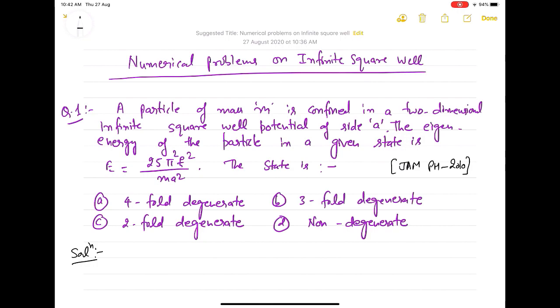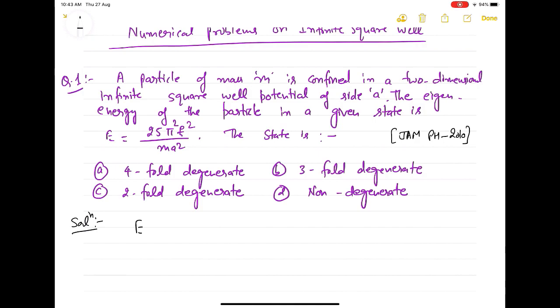This is question number one. A particle of mass m is confined in a two-dimensional infinite square wall potential of side A. The eigenergy of the particle is given in a state as E equal 25π²ℏ²/(ma²), where a is the dimension of the box. We are asked to find out the state is this particular state in which the energy of the particle of mass m is this much.